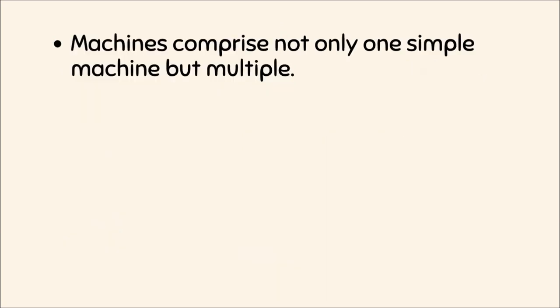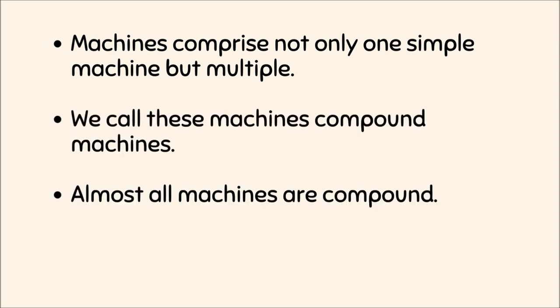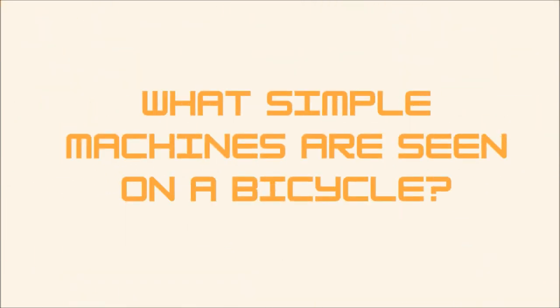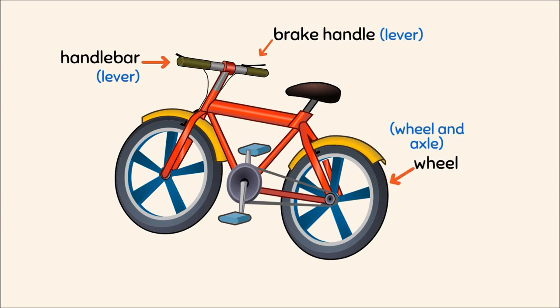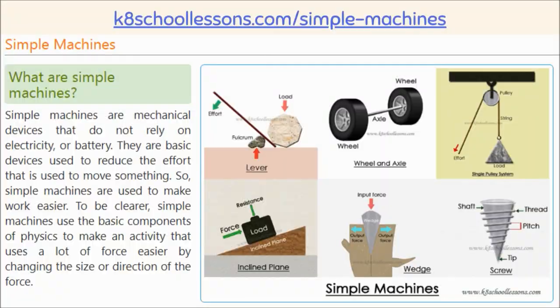Machines comprise not only one simple machine but multiple — we call these compound machines. Almost all machines are compound; bicycles and cars are good examples. Simple machines found on a bicycle include: the handlebar acting as a lever, the brake handle acting as a lever, the wheel acting as wheel and axle, the pedal acting as a lever, and the gears or cog wheels and chain acting as pulleys and wheel and axle.